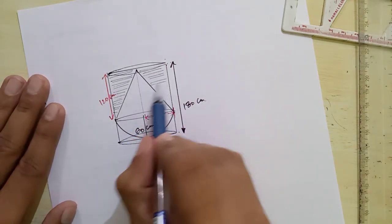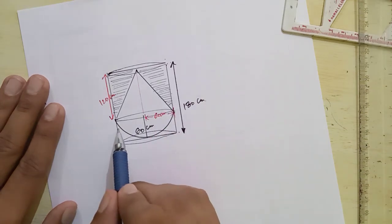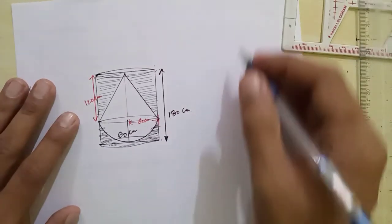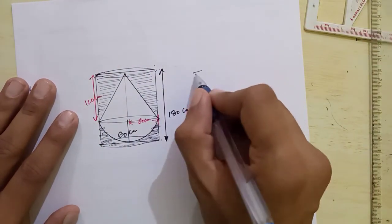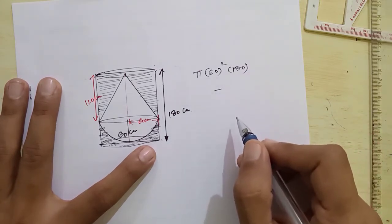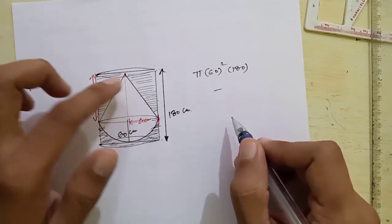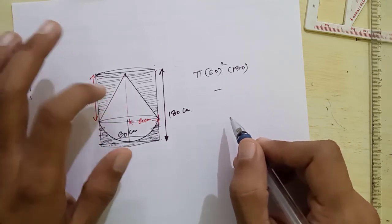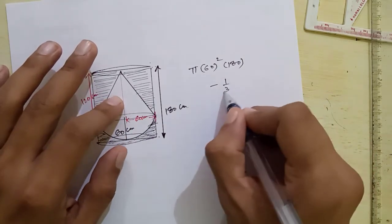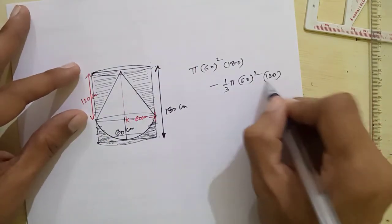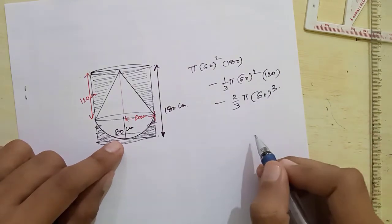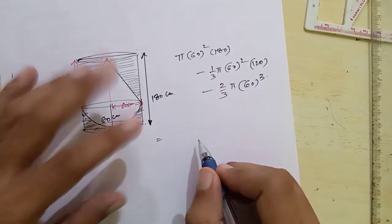The cylinder was initially full of water. When this combined cone-and-hemisphere object is placed inside, water is displaced. We need to find the remaining volume of water. The concept: volume of water remaining = volume of cylinder minus volume of cone minus volume of hemisphere. So: π r² h − (1/3) π r² h − (2/3) π r³, with radius = 60 cm throughout.